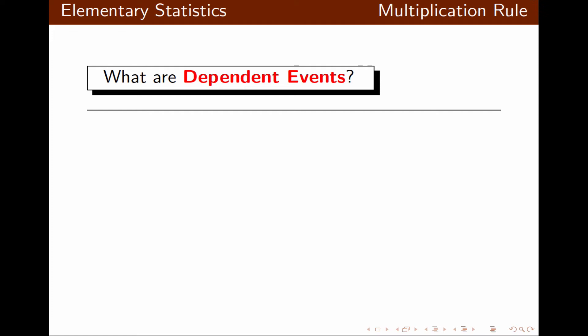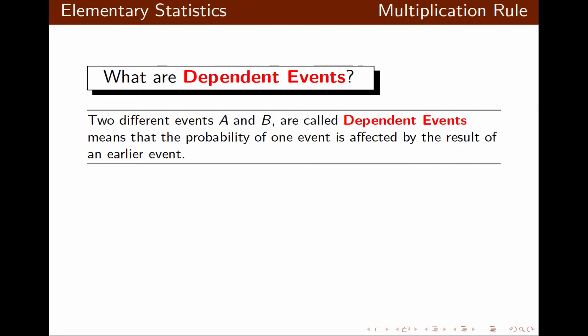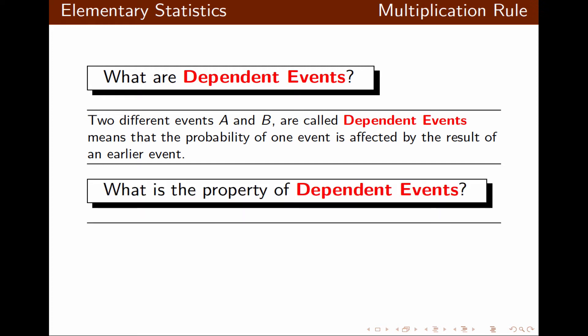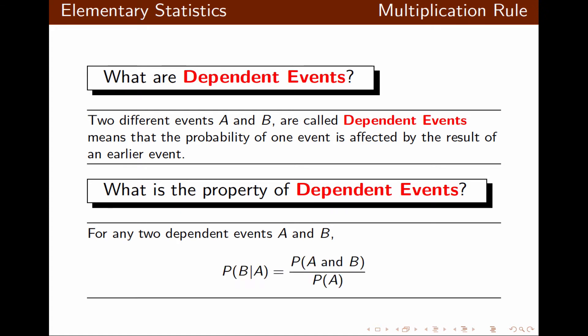Now let's talk about dependent events. Two events A and B are called dependent events, meaning the probability of one event is affected by the result of an earlier event. One property of dependent events is that probability of B given A equals probability of A and B divided by probability of A, which is the given event.